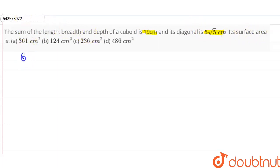So we have to find the surface area of cuboid and the formula for calculating the surface area of cuboid is equal to 2 into length into breadth plus breadth into height plus height into length.